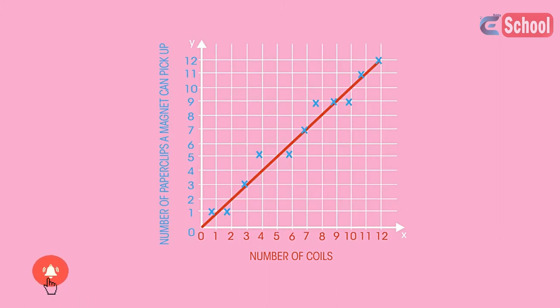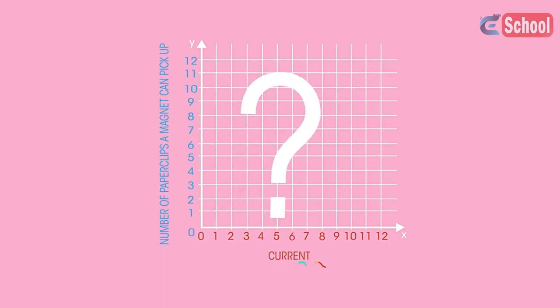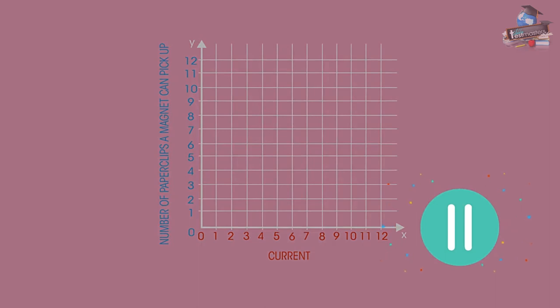So that graph has the number of coils on the x-axis. How do you think the graph would look if we instead had the current on the x-axis? What would the relationship be between the current and the number of paper clips? Pause the video and have a think.